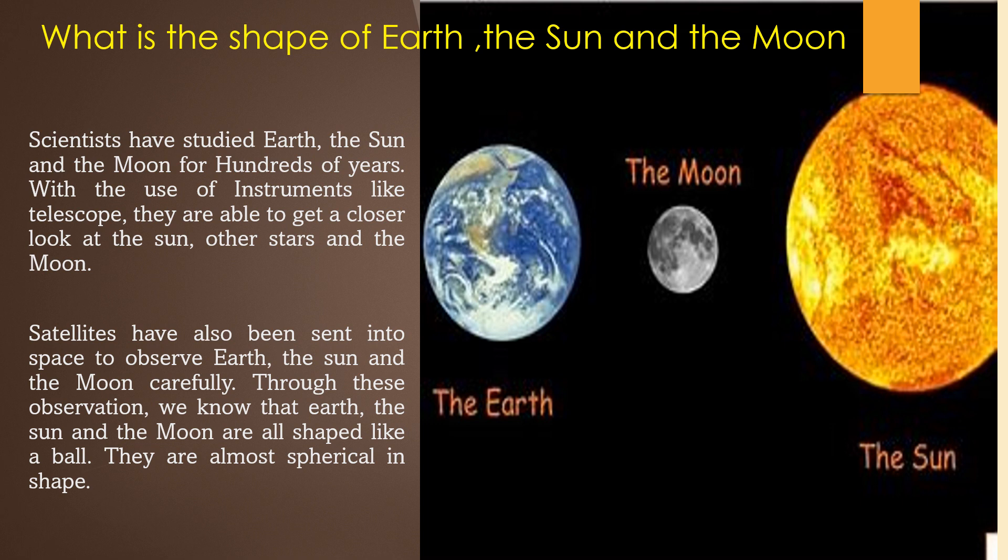Satellites have also been sent into space to observe the Earth, the Sun, and the Moon carefully. Through these observations, we know that Earth, the Sun, and the Moon are all shaped like a ball. They are almost spherical in shape.